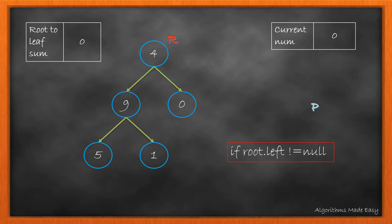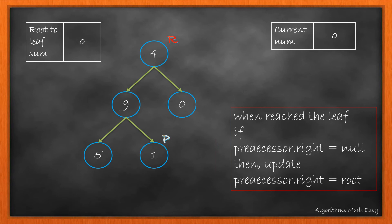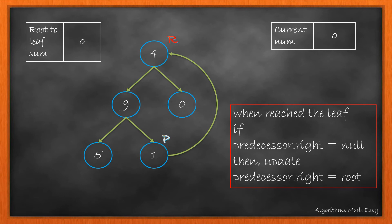Now we first check if left is null or not. As it is not null, we make left as our predecessor and then we move the predecessor to the right till it reaches leaf. We reach 1. Now we check if the right of predecessor is null or not. As it is null, we will create a link. We update right of predecessor to root.